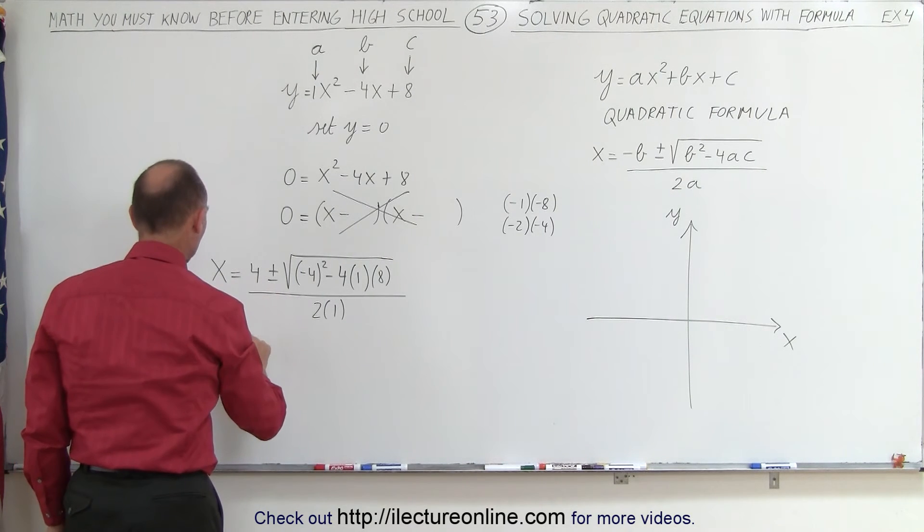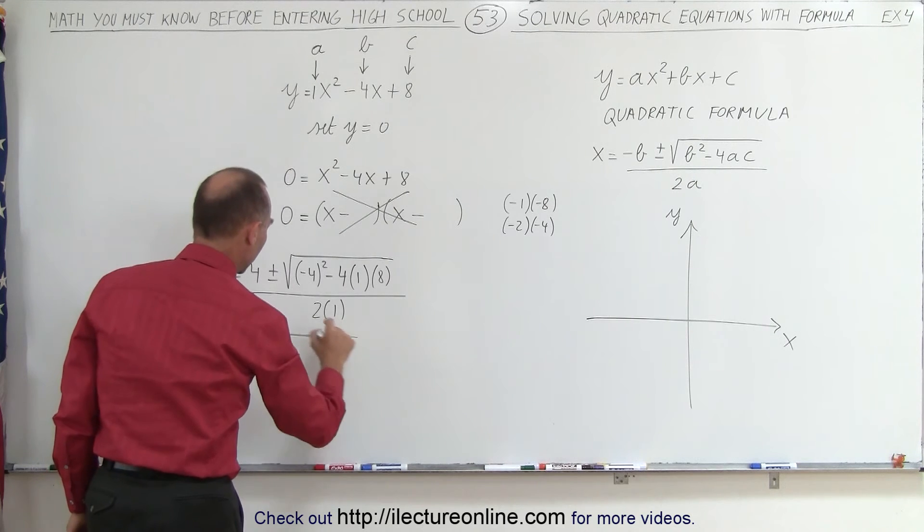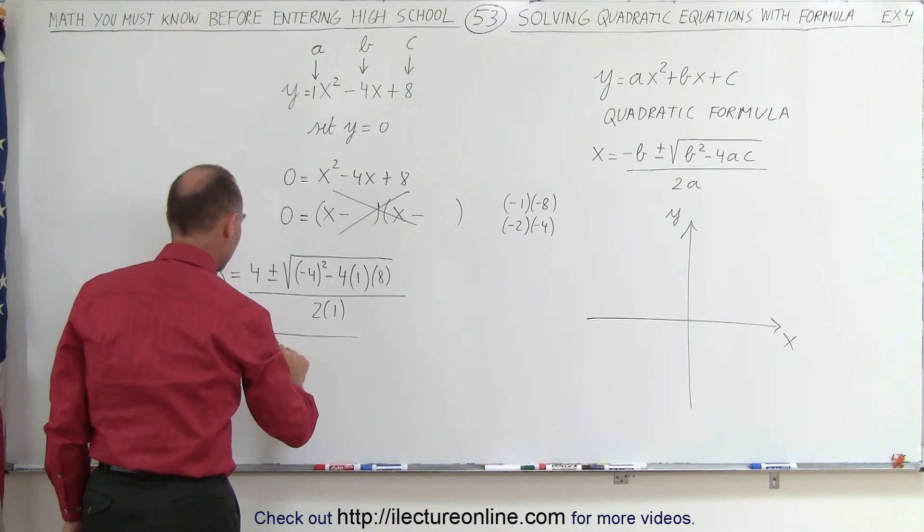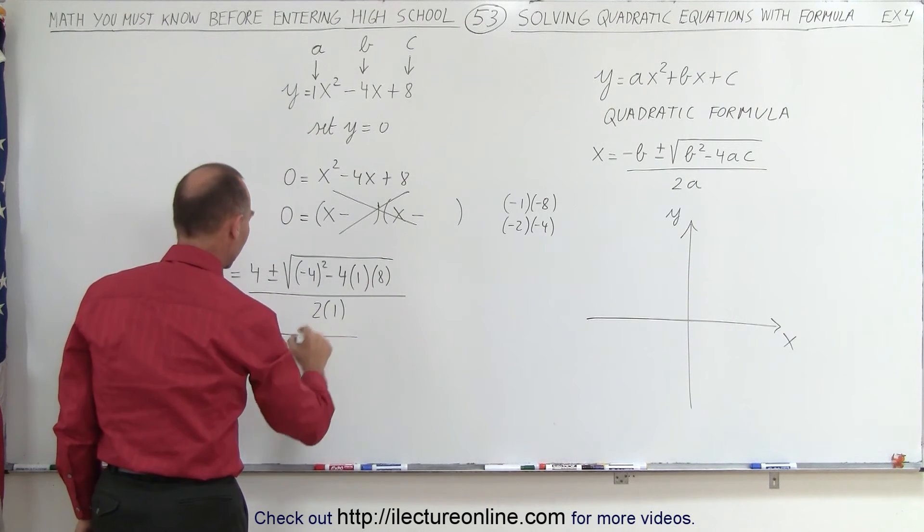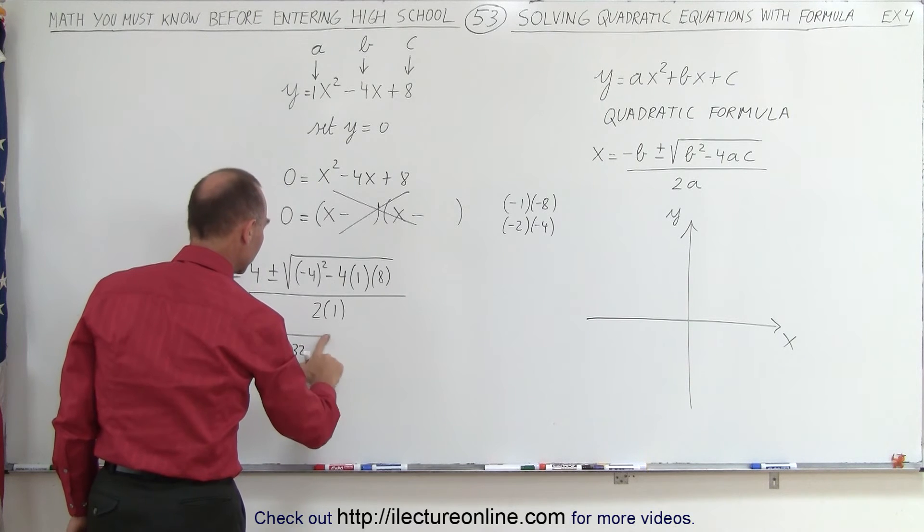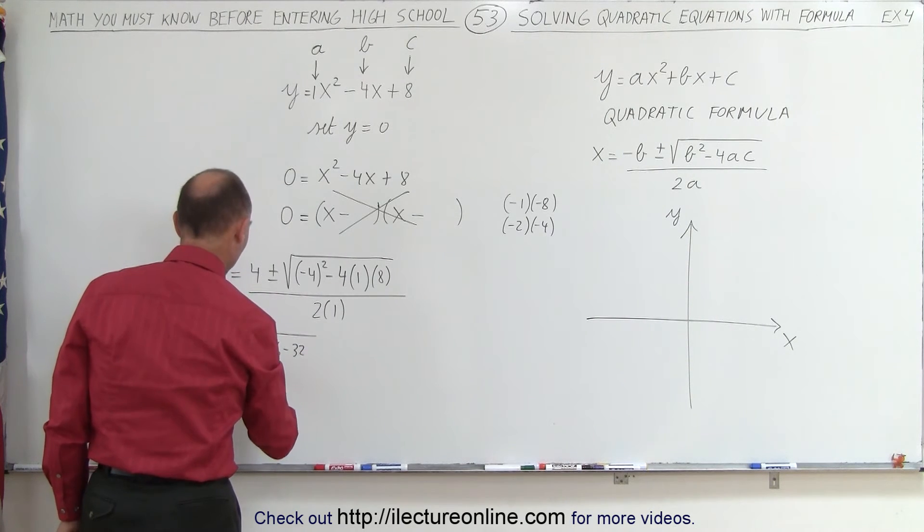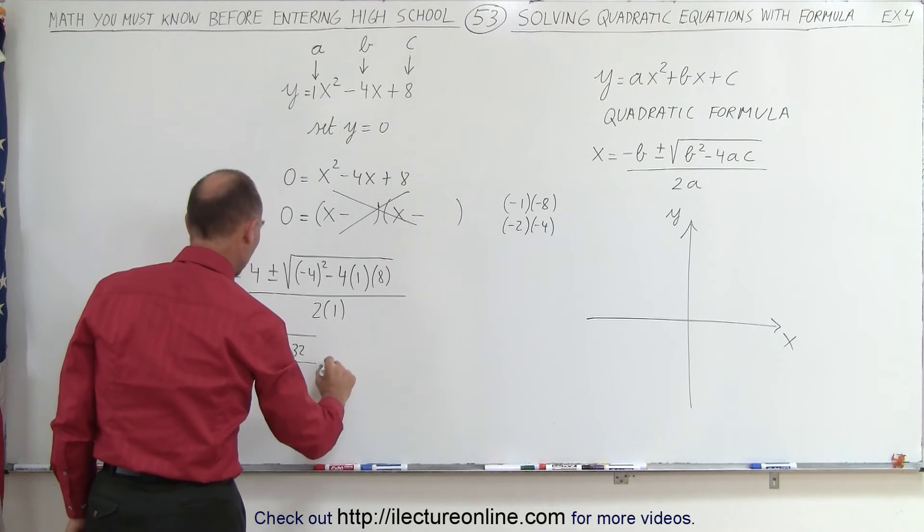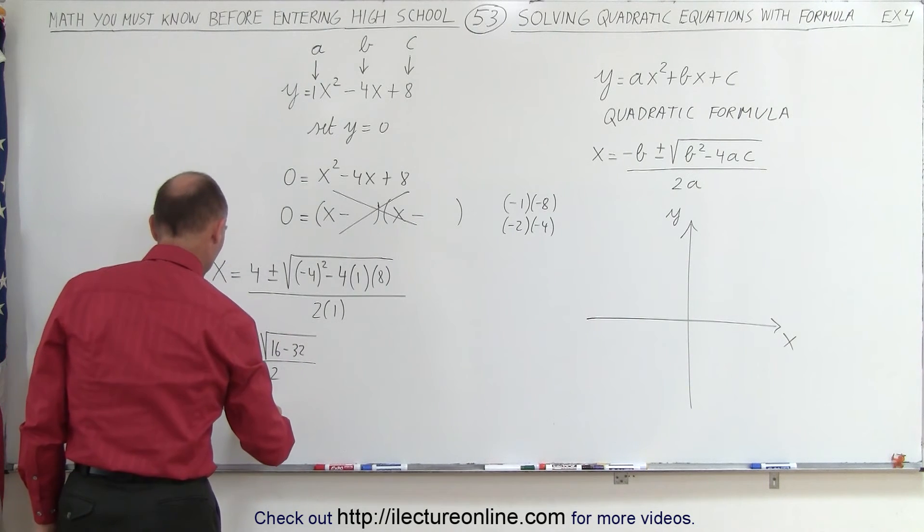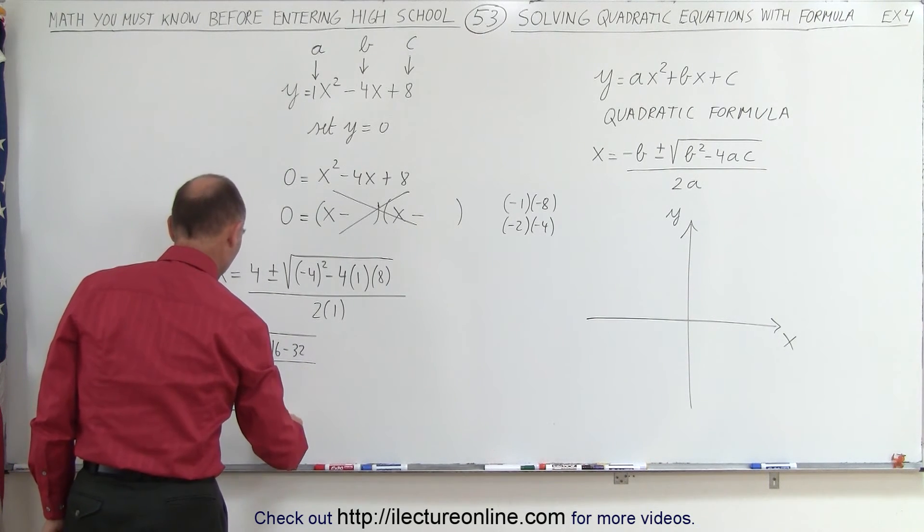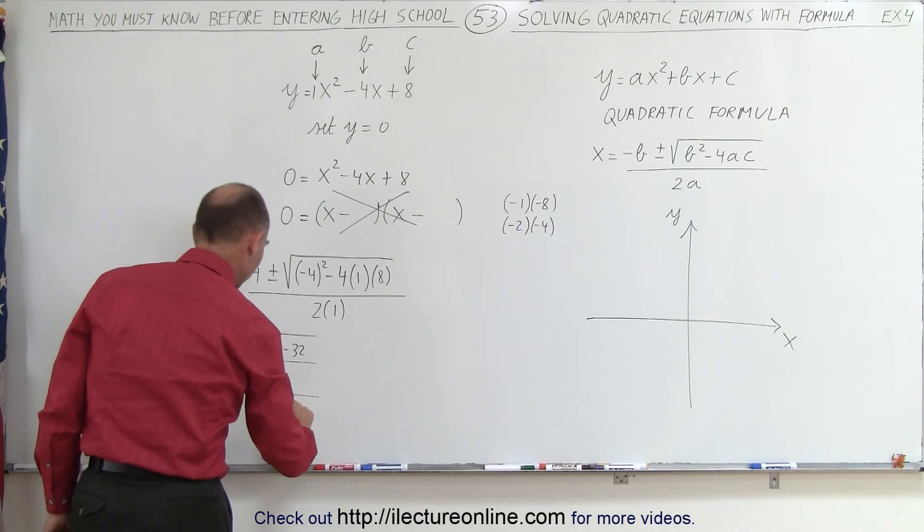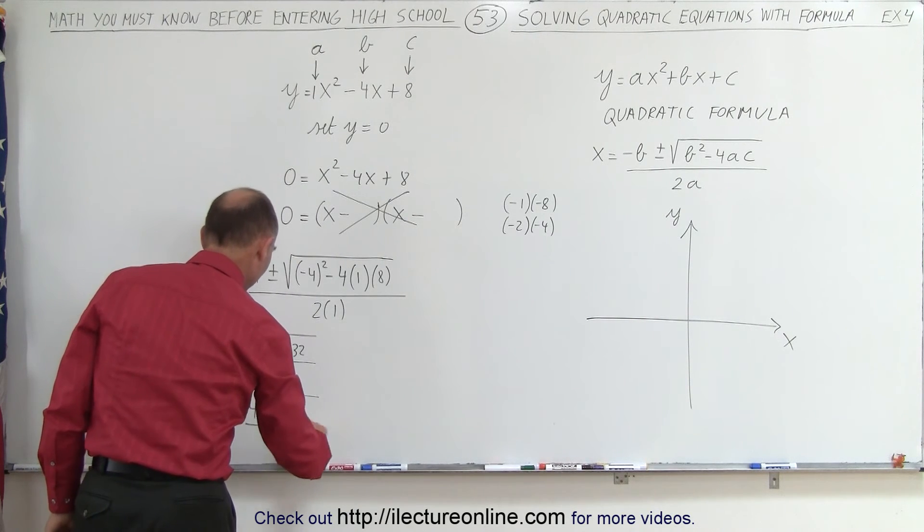x is equal to 4 plus or minus the square root. Negative 4 squared is 16, minus 4 times 8, which is minus 32. All divided by 2 times 1, which is 2, which means that x is equal to 4 plus or minus the square root of 16 minus 32, is minus 16, divided by 2.